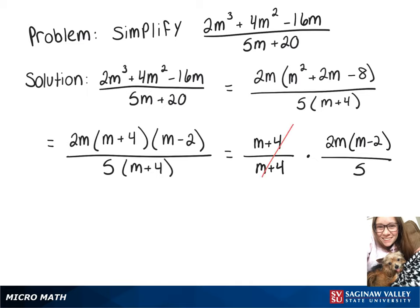m plus 4 over m plus 4 is 1, so that'll go away, which leaves us with 2m times m minus 2 over 5.